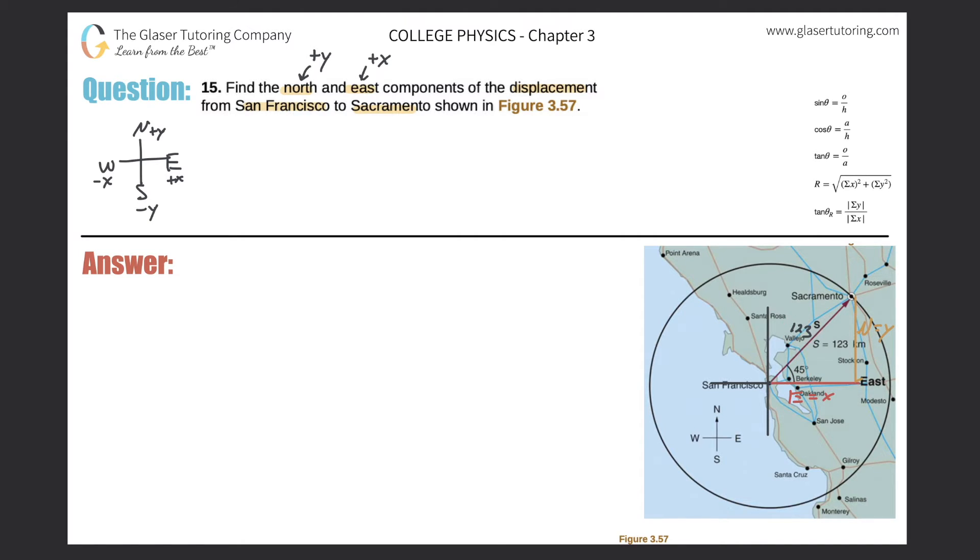So therefore, we would be using cosine, right? So cosine of theta is equal to adjacent over hypotenuse. The cosine of 45 would be equal to my east component, let's say, over the hypotenuse of 123.